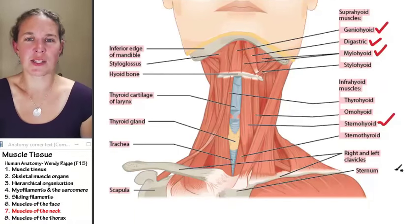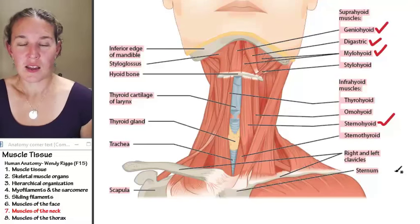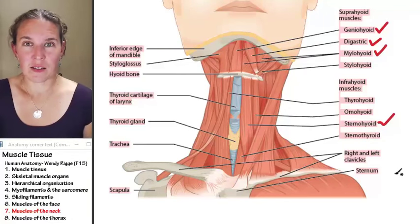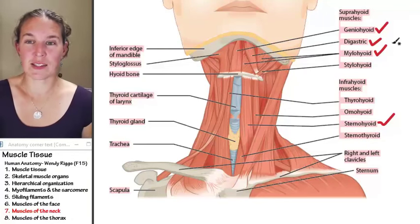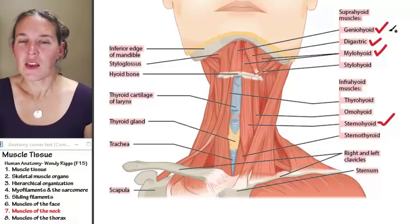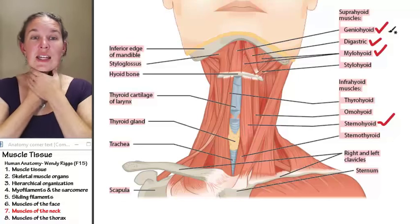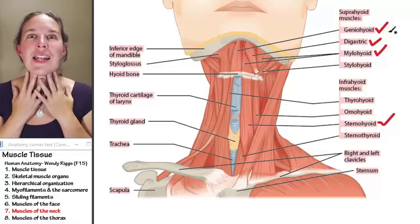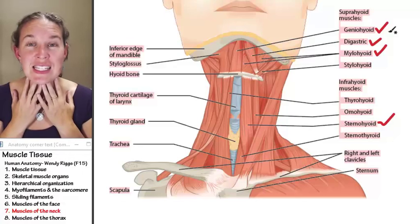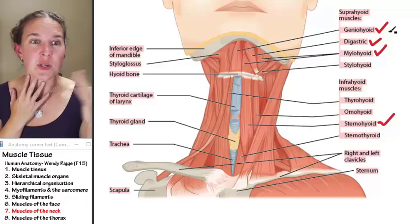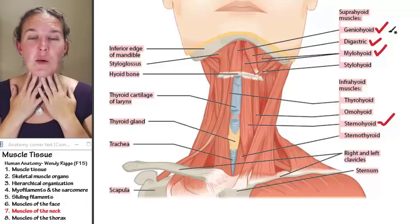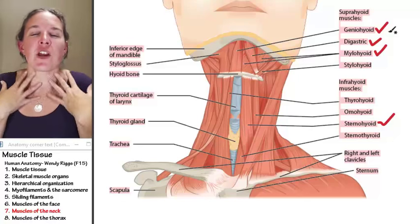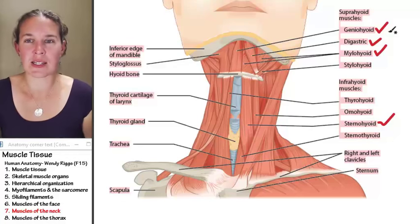What happened to this lady's neck? It's really, really a long neck. Let's talk about neck muscles. What neck muscle would we expect to see here that we talked about in the previous section? Platysma. Platysma is very superficial to all of this.